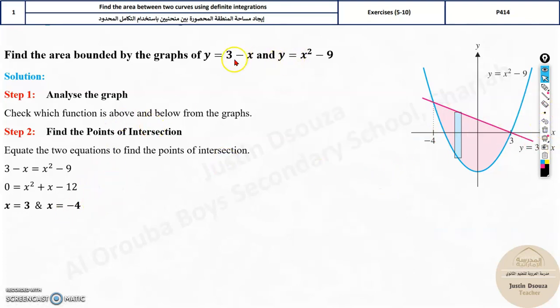We have the functions, the upper function and lower function. Now you have to just substitute the values in the formula and solve. All you need to do is substitute. Upper function f of x is 3 minus x. Lower function x squared minus 9. The lower limit is negative 4, starts with the lower limit to the upper limit until 3. All you did is substitution.